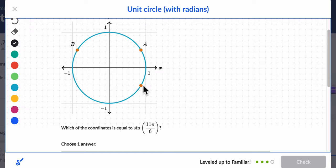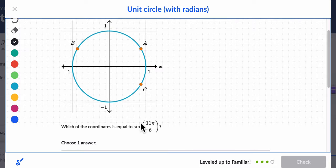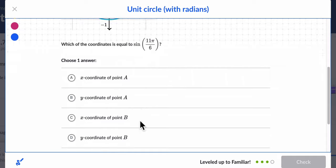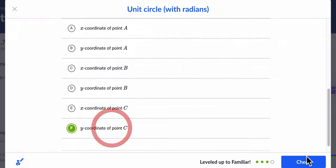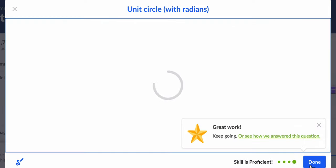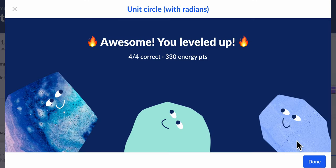So, 11 pi over 6 is 1 sixth less, so it's point C. And that, it's the sine, so it refers to the y value of C, which is right here. Got it. All right, hope that helped.